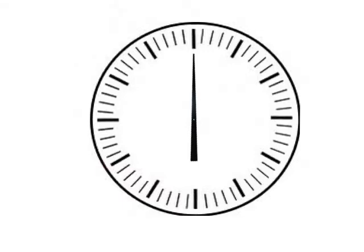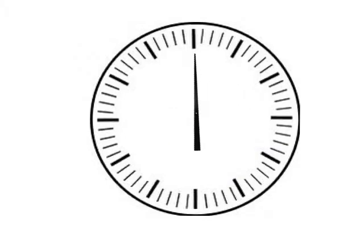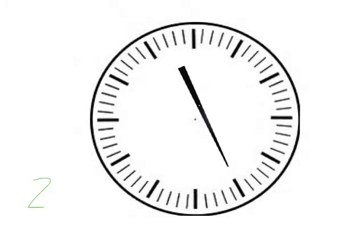As I move the minute hand around like this, you're going to skip count for me in fives. Here we go — let's see if you get how many minutes I've moved the hand, counting along, starting at zero. How many minutes did we have there? Twenty-five minutes is what I got, and I hope you got the same — twenty-five minutes.